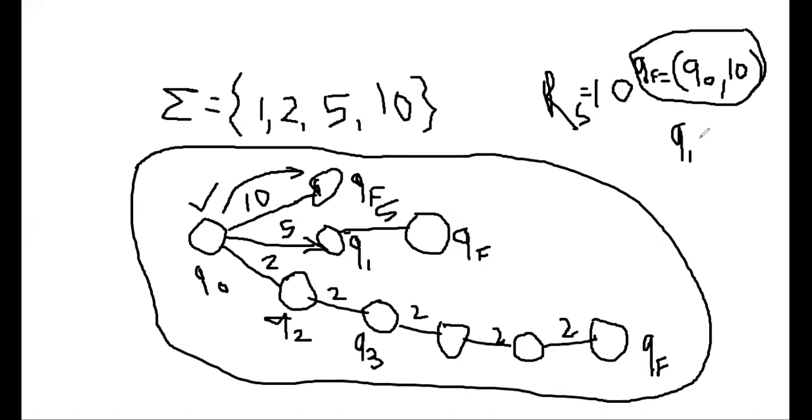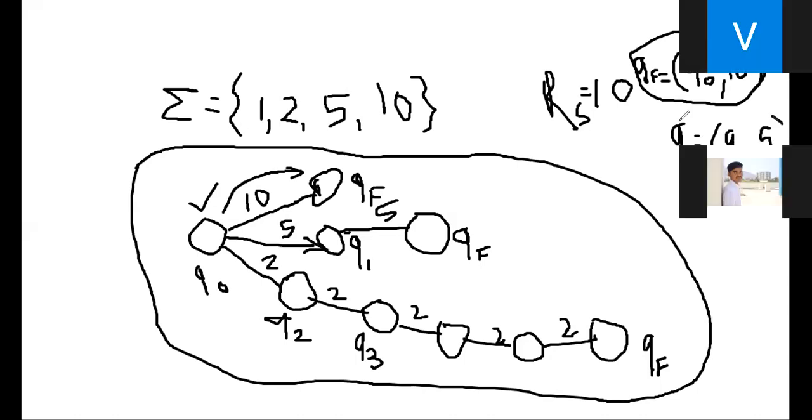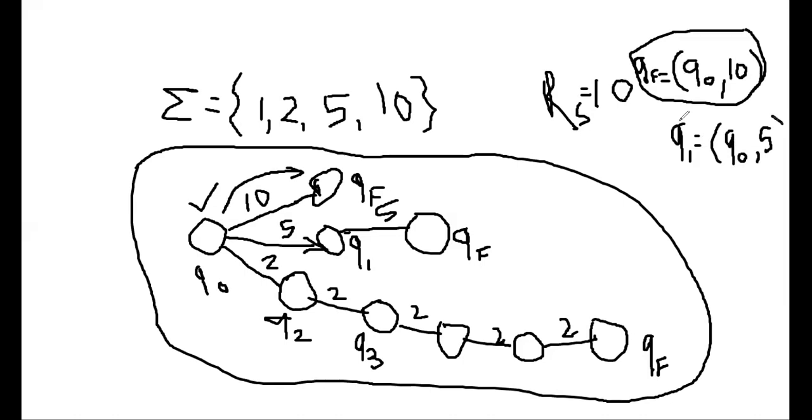So how I will write, so how am I reaching to the q1 state, q1 state from the state q0 with the input 5, with the input 5. So this is how actually I am writing the transition.